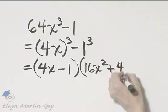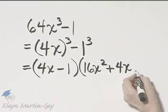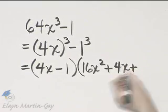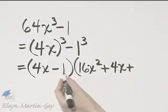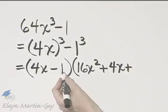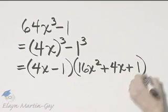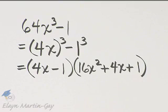So what's 4x times 1? It's 4x. This next sign is always plus. And then the last is this 1 squared. What is 1 squared? It is 1. And I have factored completely. You can check by multiplication.